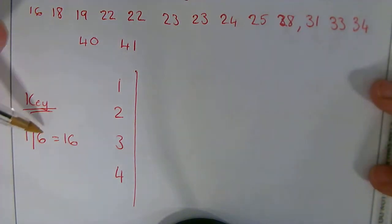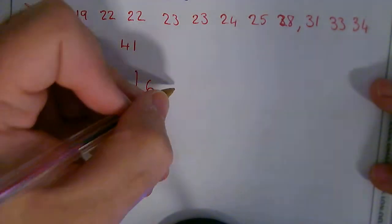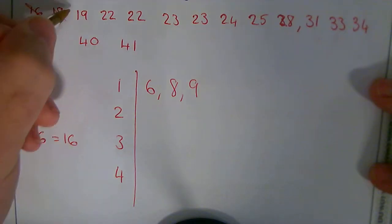So I've just said 1 line 6 equals 16. So the 16 is going to be 1, and then I'm going to put a 6, then a comma, and I've got an 8, then a 9.